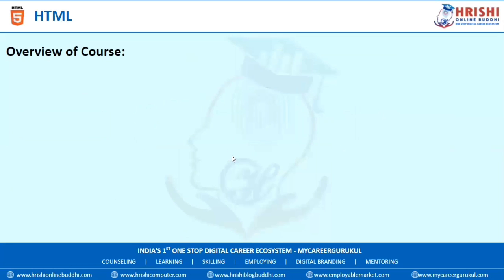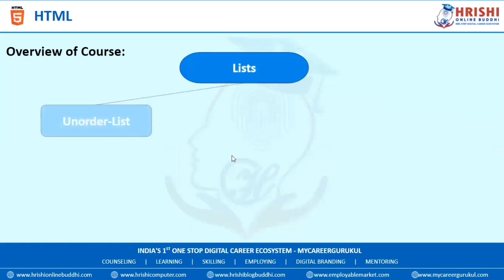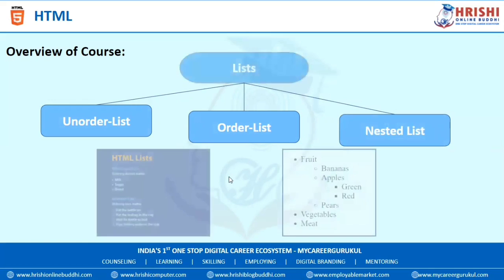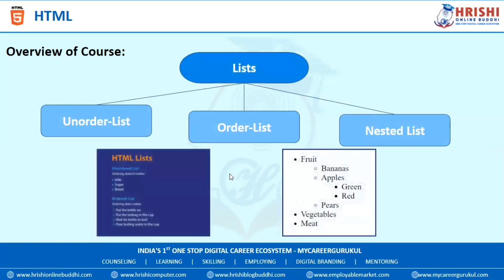The next topic is List. In this, we will learn unordered list, ordered list, and nested list, with some examples of ordered list, unordered list, and nested list.